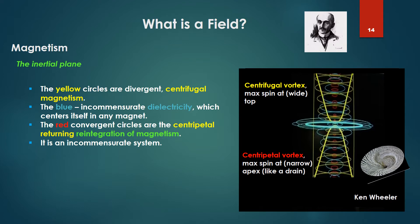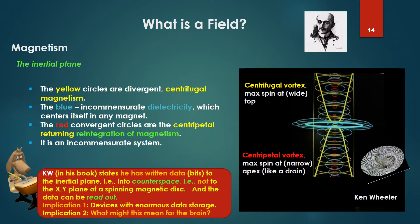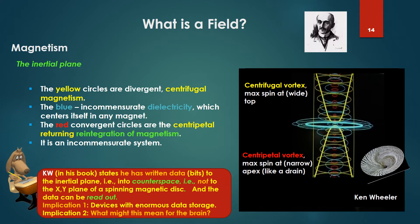Focusing on that inertial plane within the magnet: Wheeler states in his book that he has written data bits to this inertial plane — into counter space, that is the counter-spatial aspect of that disk. We're not talking the same space; we're talking a counter-spatial aspect defined by the inertial plane of the magnet, and the data can be read out. One implication is devices with enormous data storage over the standard XY storage. Implication two: what might this mean for the brain? Is the brain's dynamics also going to involve this dielectric plane and counter space?